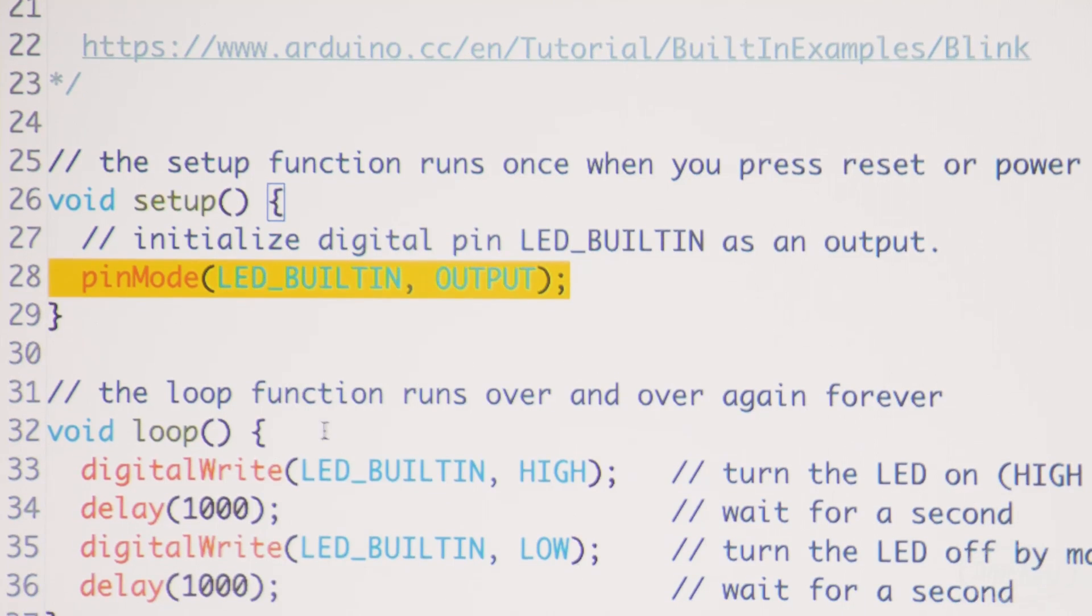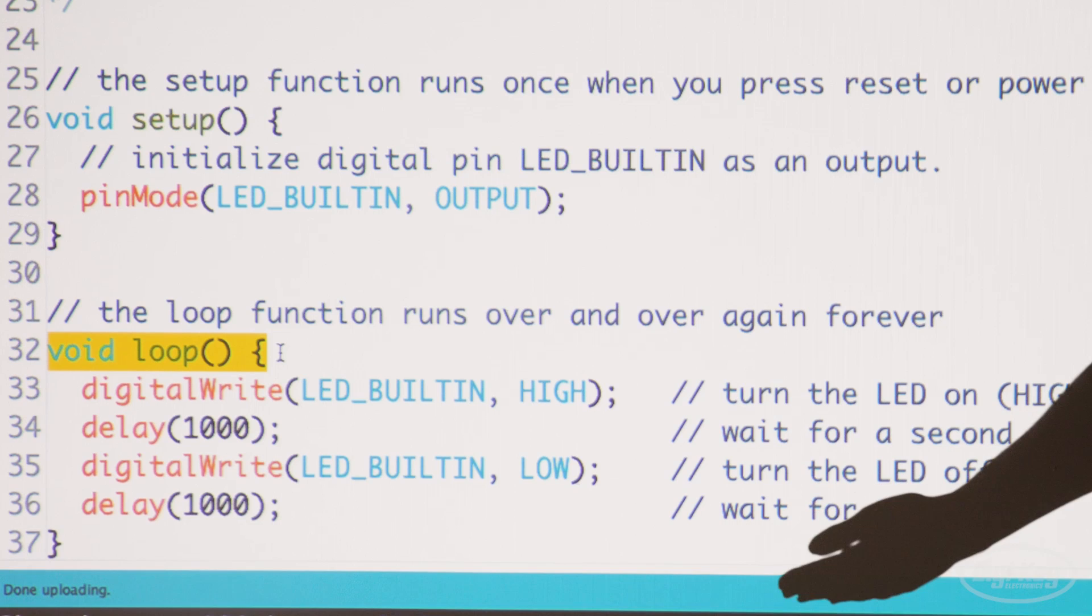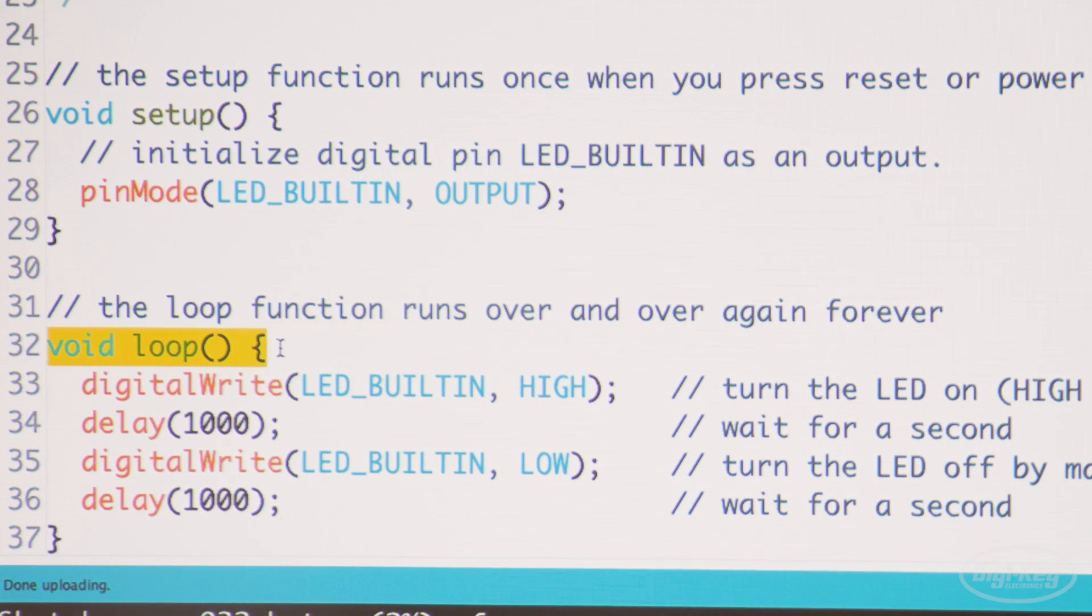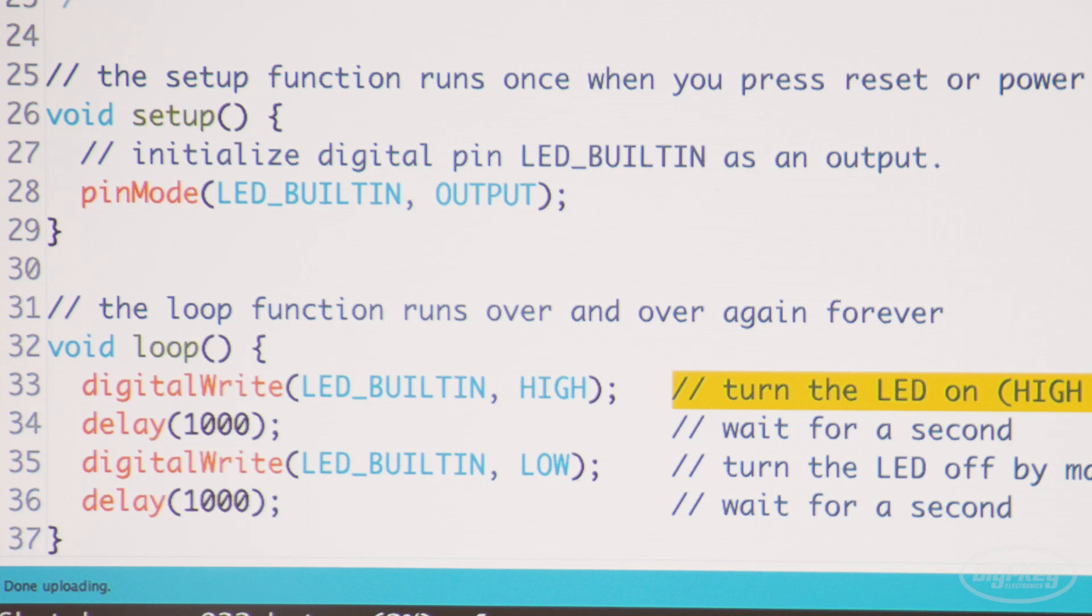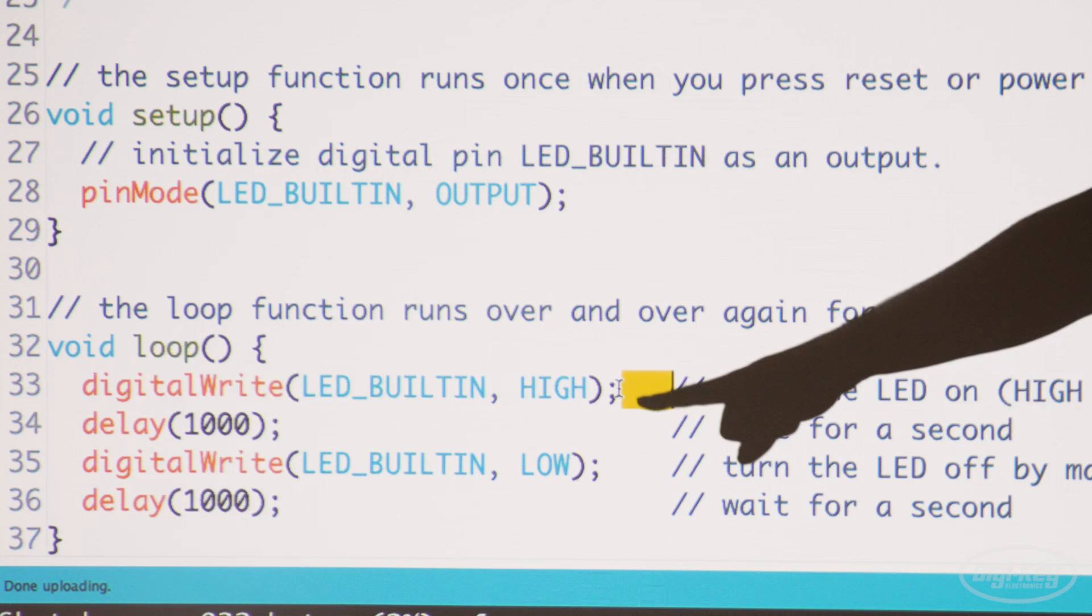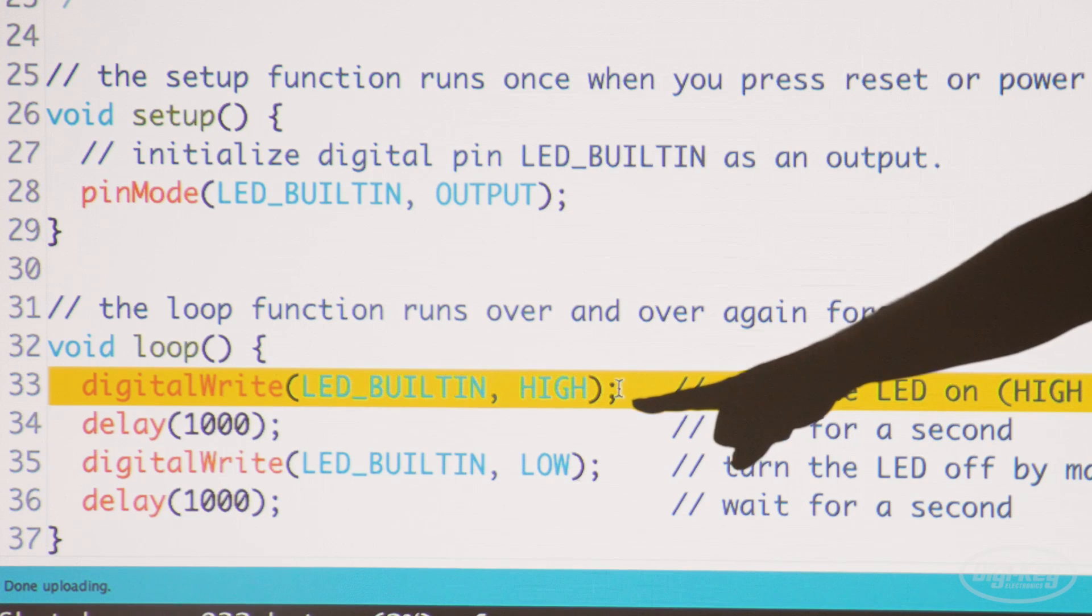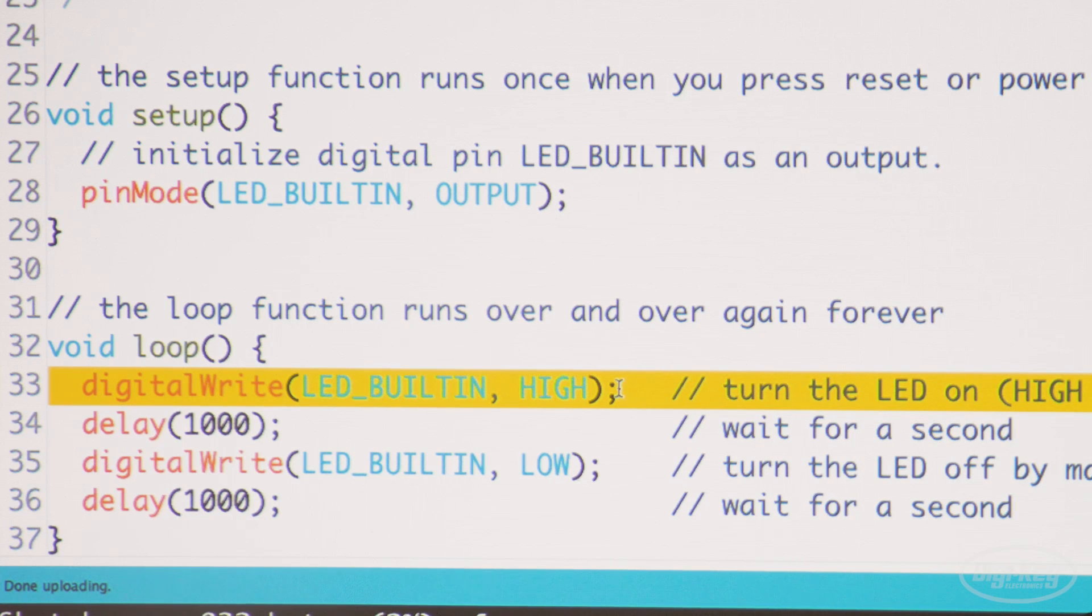The main body of the program is inside the loop. This part of the code will execute on repeat, so long as the board has power. The gray text following double slashes are also comments to make the program easier to understand. The output command we're going to use is called digitalWrite, which is a function that sets a pin high or low, on or off.